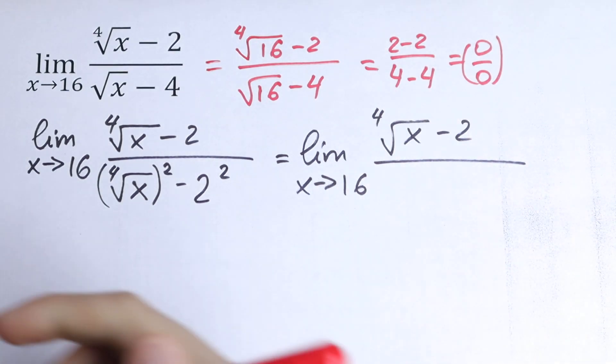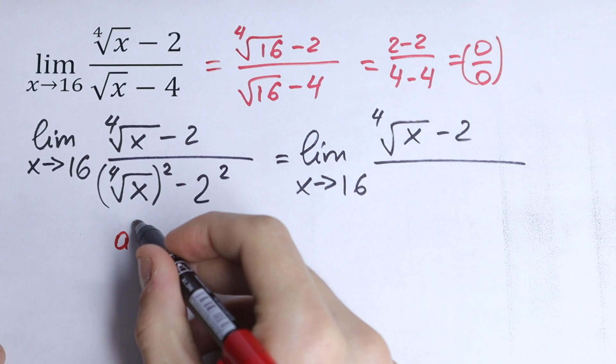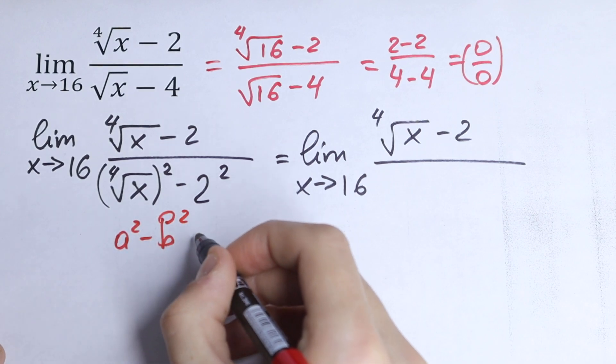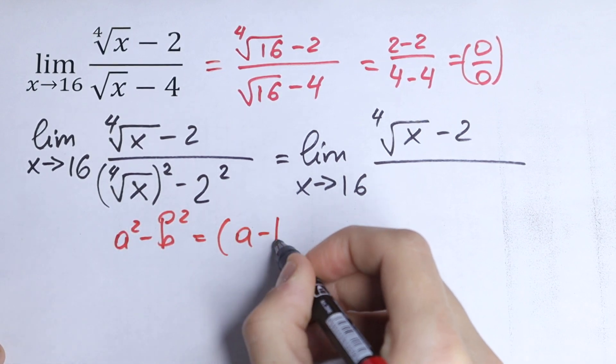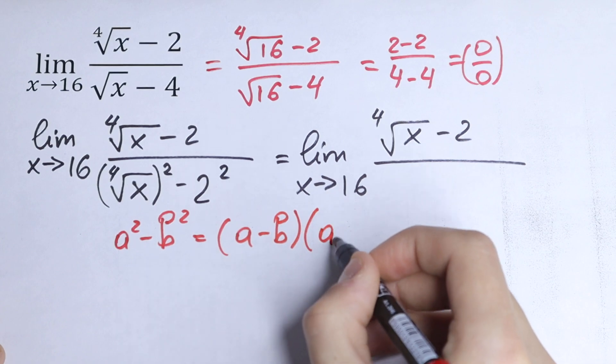We all know the formula that a squared minus b squared equals a minus b times a plus b.